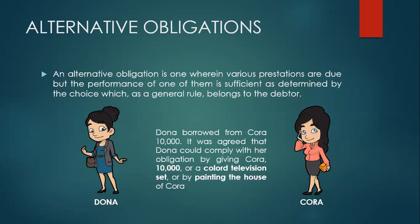What are those? Number one, 10,000 pesos. Number two, colored television set. And number three, by painting the house of Cora. So there are three prestations which are due. However, under the rule on alternative obligation, from among these three prestations, only one of them is sufficient in order to comply with the obligation. So if Donna chooses to give Cora 10,000 pesos, then the obligation will be extinguished.